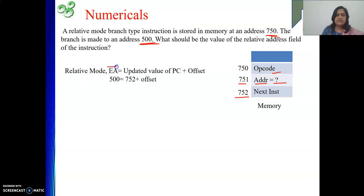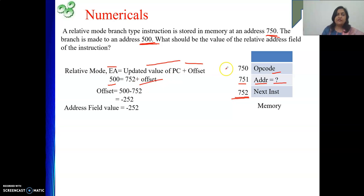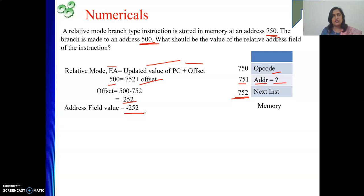For relative mode, effective address equals updated value of PC plus offset. Updated value of PC means address of the next instruction, that is 752. The effective address is 500. We need to find the offset. So the value will be 500 minus 752, which equals minus 252. Therefore the address field value is minus 252. Both numericals are of the same type — we just need to know relative addressing mode and the meaning of updated value of PC.